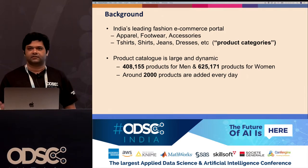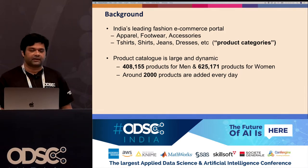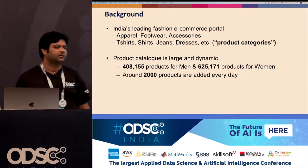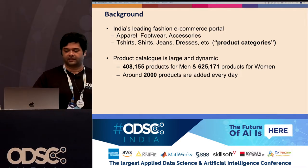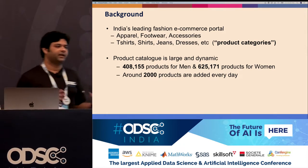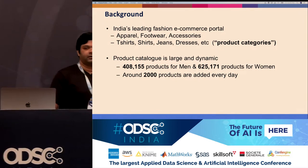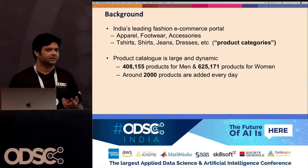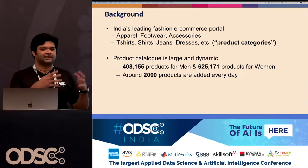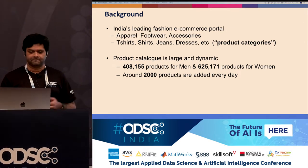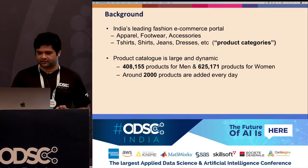So what are the challenges? As you can imagine, the product catalog is large and dynamic. At the time of this work there were about four lakh products in the men's category and six lakh in women's, with about 2,000 products added every day. This is unique to fashion — as opposed to other domains, the catalog is quite dynamic because fashion keeps changing, and stuff gets outdated very quickly.